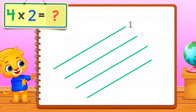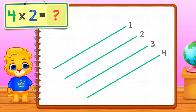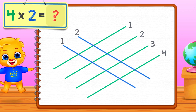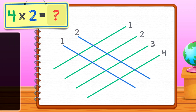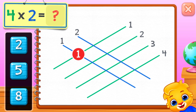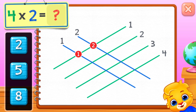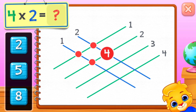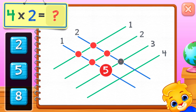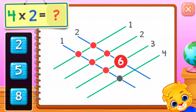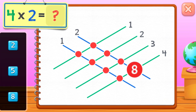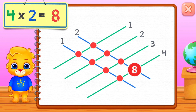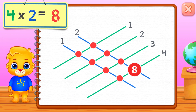Four times two equals — one, two, three, four, five, six, seven, eight. Four times two equals eight.